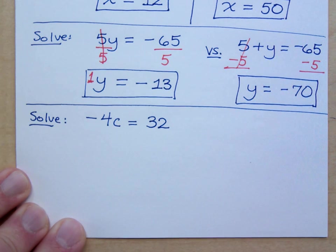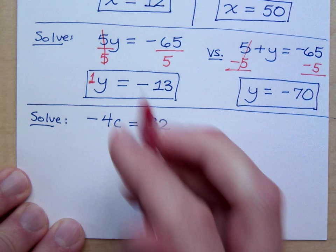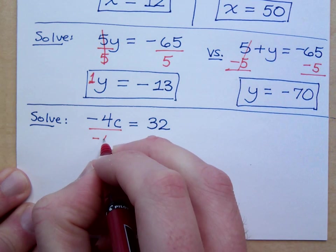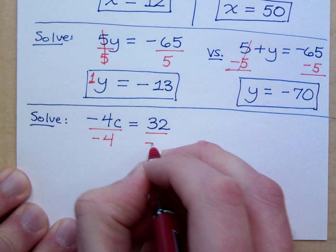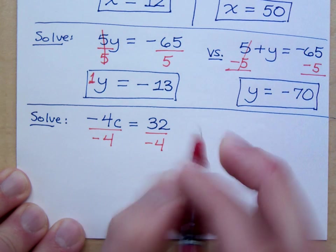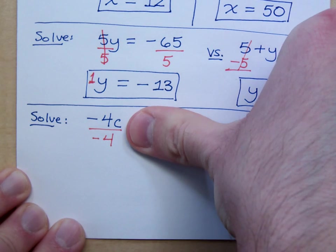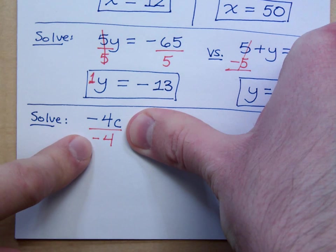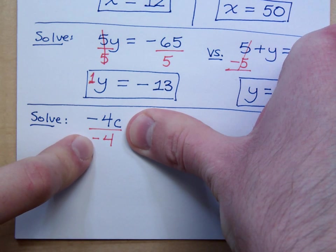How do you get c by itself? Divide by negative 4, right? And if you're not sure, check this out. Just focus over here. What's a negative divided by negative? It's positive. So we need that to be a positive 1.